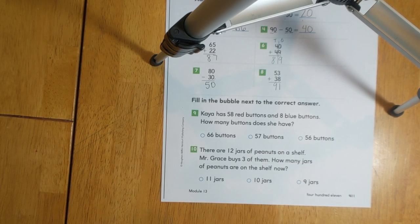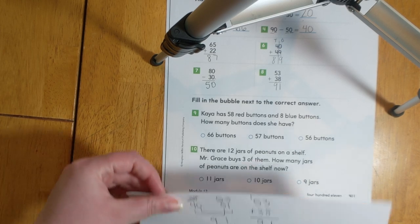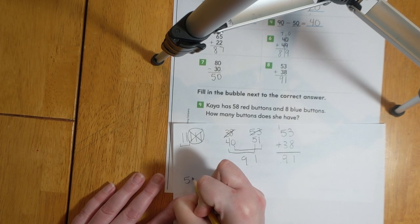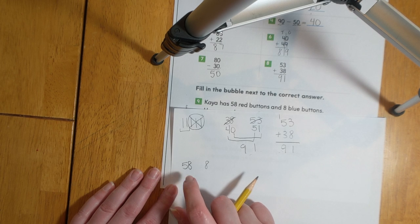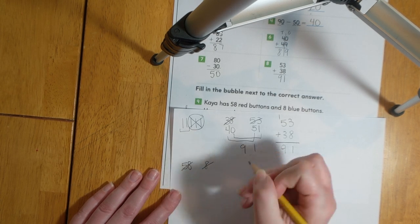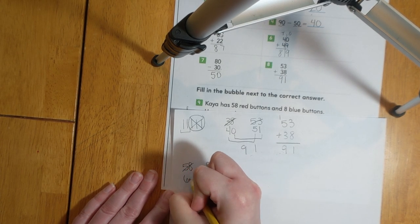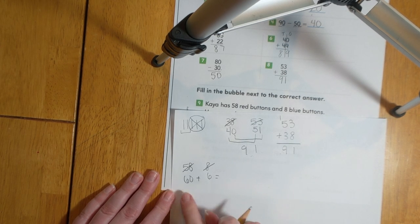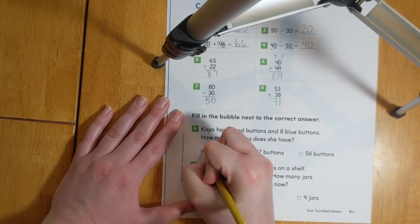For numbers nine and 10, they want us to fill in the bubble next to the correct answer. Kayla has 58 red buttons and eight blue buttons. How many buttons does she have? For this one, let's practice making a 10 to solve. We're starting with the number 58. Then we're adding eight blue buttons. I know that if I add two more to this number 58, it will give me a nice even 60. So let's borrow from this eight. Eight minus two equals six. And this 58 will become a 60. Then I just add 60 plus six. And we know that that equals 66. So Kayla has 66 buttons.